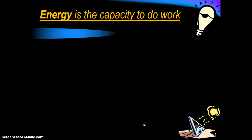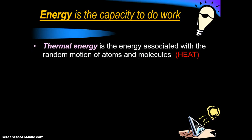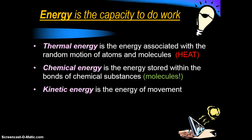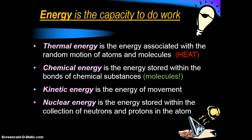Energy is the capacity to do work, and there are lots of different types. Thermal energy is the energy associated with the motion of atoms and molecules — what we think of as heat. Chemical energy is energy stored within the bonds of chemical substances, so molecules like carbohydrates or ATP are forms of chemical energy. Kinetic energy is the energy of movement that organisms actually move around with.